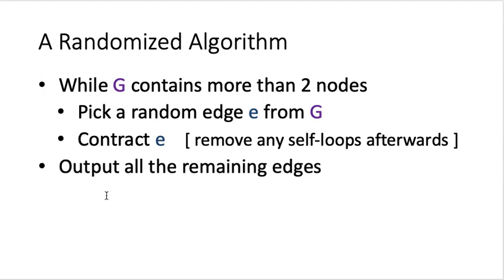Our randomized algorithm is very simple. We apply an operation called edge contraction. The algorithm starts with G, and by performing edge contraction repeatedly, the number of nodes is reduced by one each time. As long as the graph G contains more than two nodes, we pick a random edge and contract it. When the graph has exactly two nodes, we output all remaining edges in G.